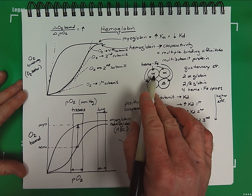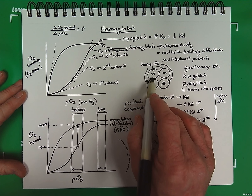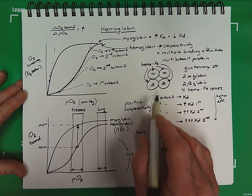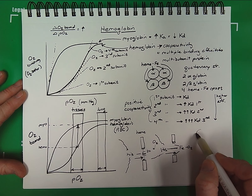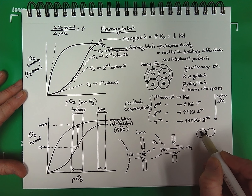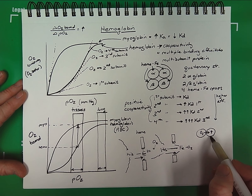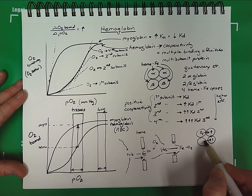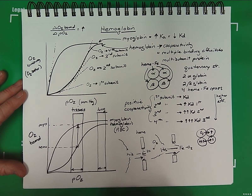This displacement of iron essentially causes a conformational change in the polypeptide that the heme is bound to. Oxygen binding to the first subunit of hemoglobin induces this conformational change, which is then transmitted to an adjacent subunit because they are physically bound together. This conformational change increases the affinity of the adjacent subunit, and each subsequent oxygen binding induces further conformational changes, further increasing affinity.